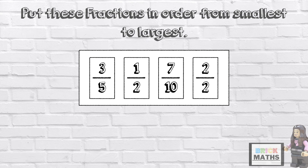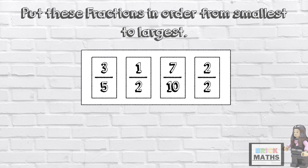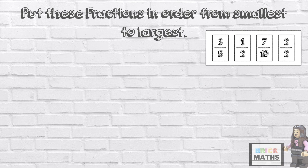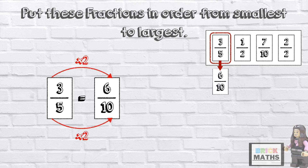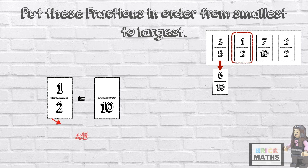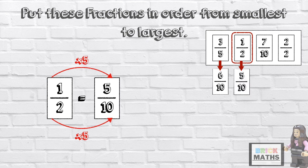First, we need to find a common denominator. All of these denominators can be multiplied to make 10, so 10 is the common denominator. Let's find an equivalent fraction for each of these fractions with 10 as the denominator. So 5 times 2 equals 10, and 3 times 2 equals 6, so 3 fifths is equivalent to 6 tenths. The next fraction is 1 half. 2 times 5 equals 10, and 1 times 5 equals 5, so 1 half is equivalent to 5 tenths.